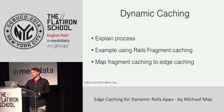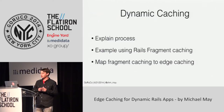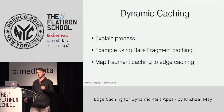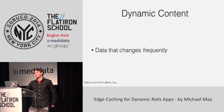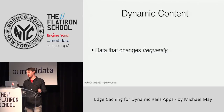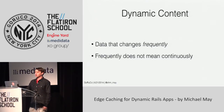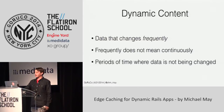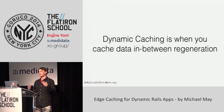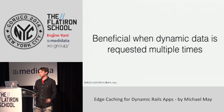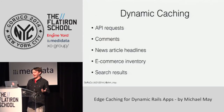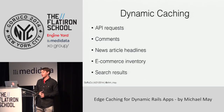Instant purge enables dynamic caching, so let's explain what that is. Dynamic content is data that changes frequently — however, frequently changing data doesn't mean it's continuously changing. There are periods of time when this data is not being changed, and dynamic caching is when we cache this data in between when it's being changed. This can be extremely beneficial when your dynamic data is being requested multiple times. Examples of things we can dynamically cache include API requests, comment threads, news articles, product inventories, and even search results.